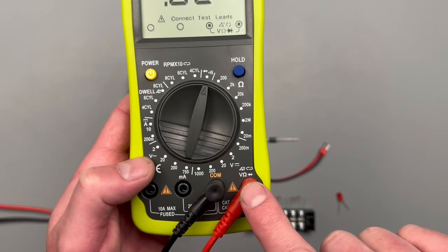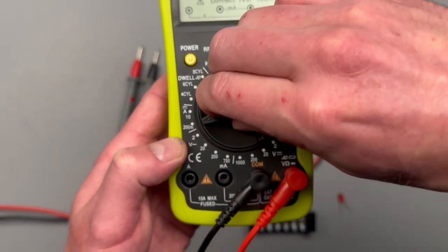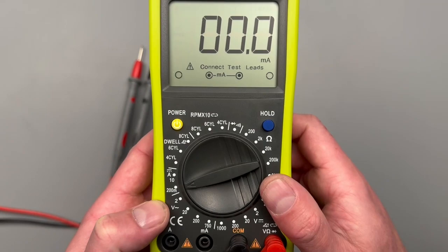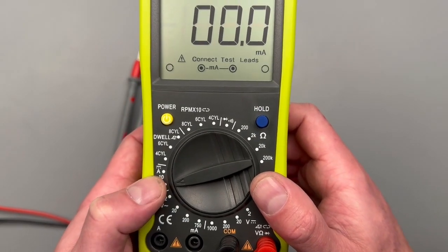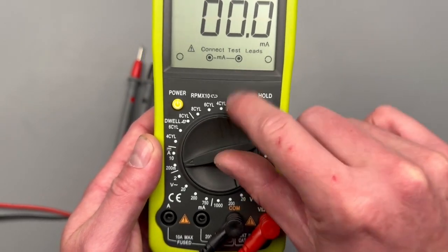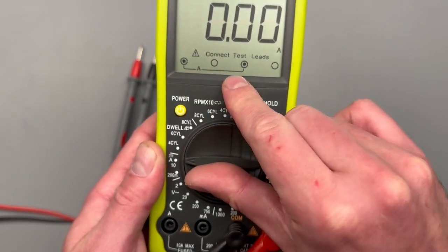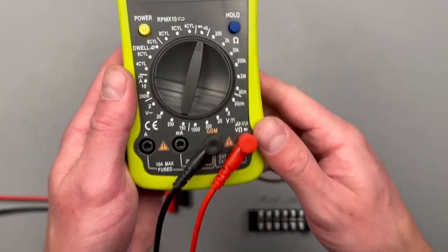The only time you're going to need to switch this red lead to these other two ports is going to be for measuring current or amperage. This is a 200 milliamp and this is up to 10 amp. It shows you you need to have the test leads connected here or to here. Otherwise, all the other settings that we'll be utilizing are going to be out of these two ports.